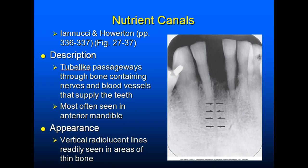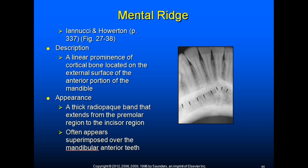Nutrient canals are tube-like passageways through bone containing nerves and blood vessels that supply the teeth. They are most often seen in the anterior mandible as vertical radiolucent lines readily seen in the thin bone. The mental ridge is a linear prominence of cortical bone on the external surface of the anterior mandible, appearing as a thick radiopaque band that extends from the premolar region to the incisor region and often appears superimposed over the mandibular anterior teeth.